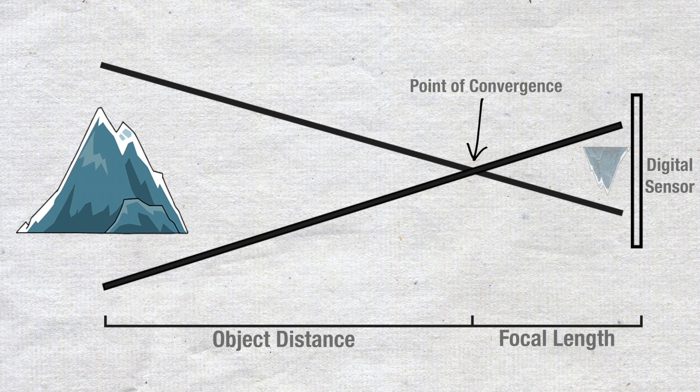Focal length is the simplest description of any camera lens. It is the optical distance from where the light rays converge to form a sharp image to the digital sensor. This length is found when the lens is focused to infinity.